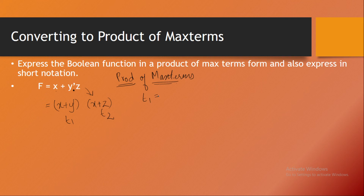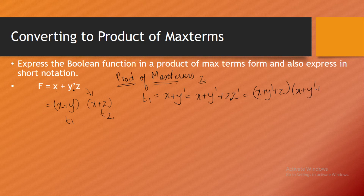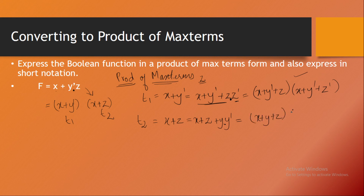Taking term one — it is x plus y-dash — and z is missing, so I add z·z-dash (which equals zero) so the OR with zero doesn't change the value. Reapplying the distributive law gives: (x + y-dash + z) into (x + y-dash + z-dash). For T2, which is x + z, y is missing, so I add y·y-dash, and applying the distributive law gives (x + y + z) into (x + y-dash + z).